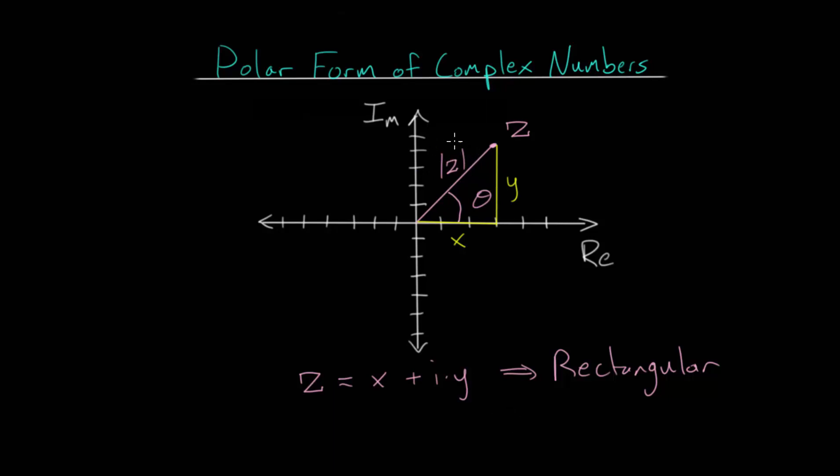Now, in a previous video, we derived the formula for the absolute value. We use the Pythagorean theorem that x squared plus y squared is equal to this hypotenuse, this magnitude squared. And we can just take a square root of each side so that the magnitude, the modulus of this complex number z, is the square root of x squared plus y squared.